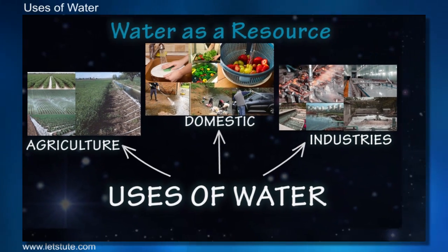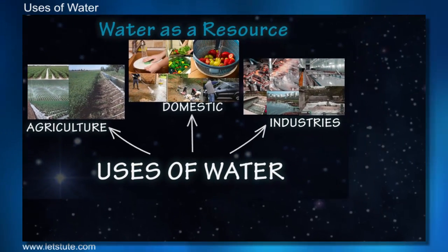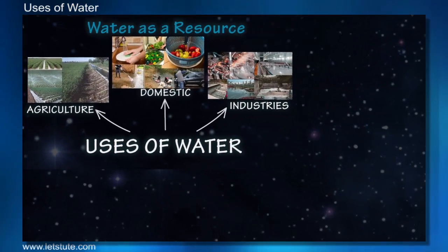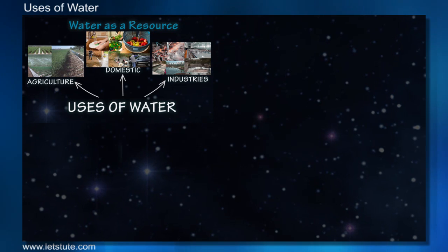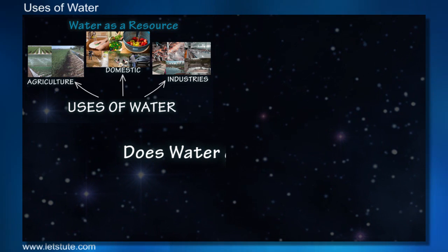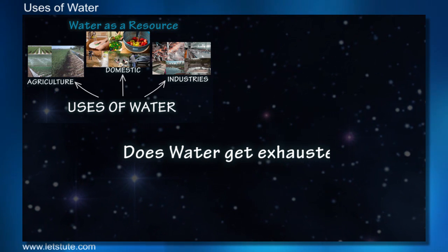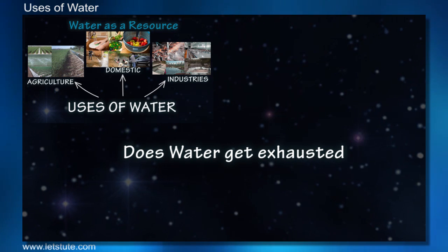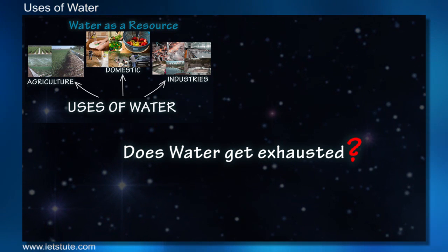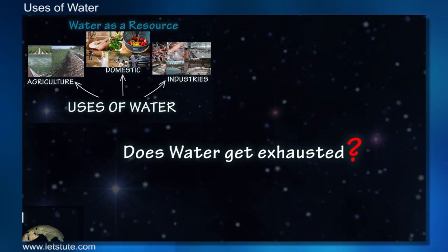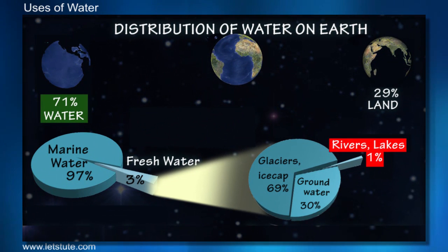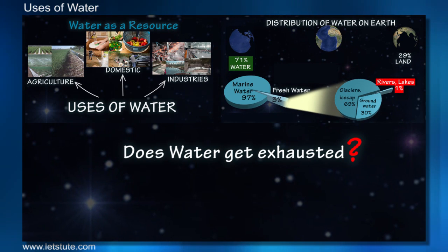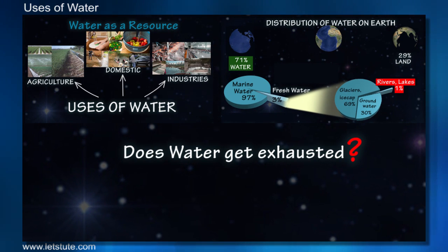Water has many different uses, but does all this water get exhausted as we use it? If that is the case, then how is this percentage of water on the earth maintained?